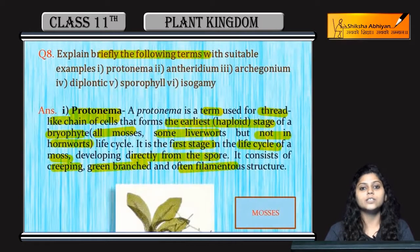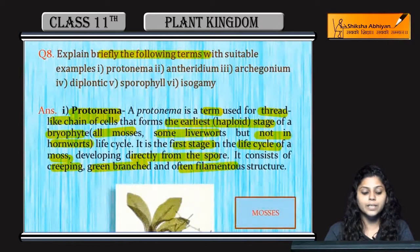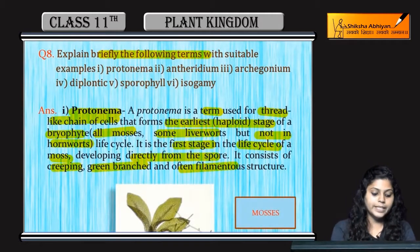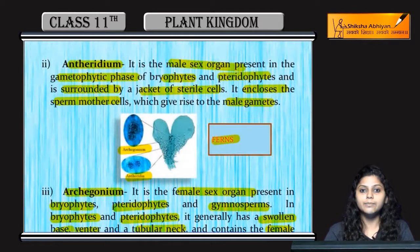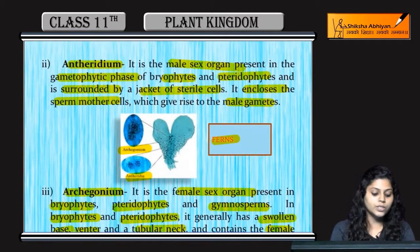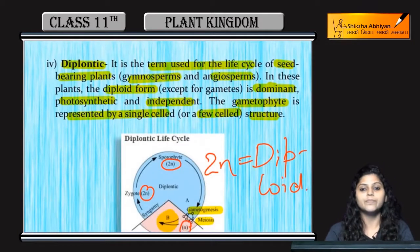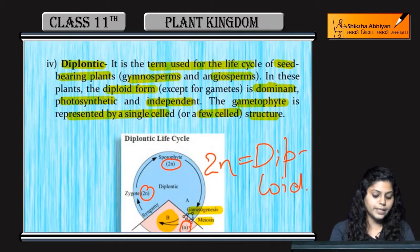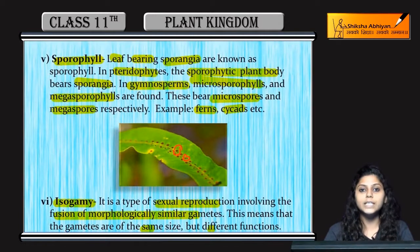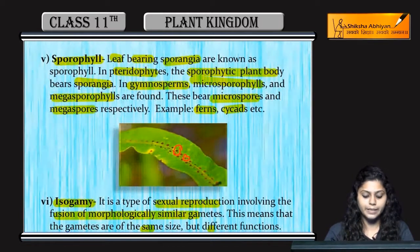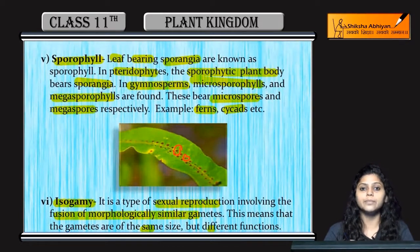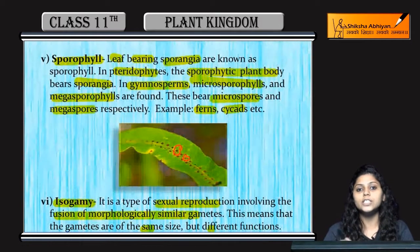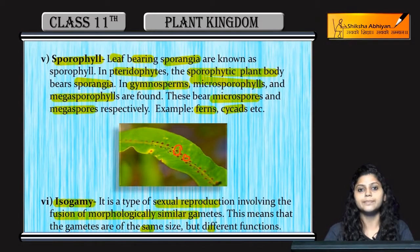To summarize: we covered mosses and their protonema, which is a thread-like structure and the earliest haploid stage of bryophytes. Then we covered Antheridium, which produces male gametes, and Archegonium, which produces female gametes. The diplontic life cycle is one where the diploid stage is dominant. Sporophylls are leaves that bear sporangia, and in isogamy, fusion of morphologically similar gametes occurs.